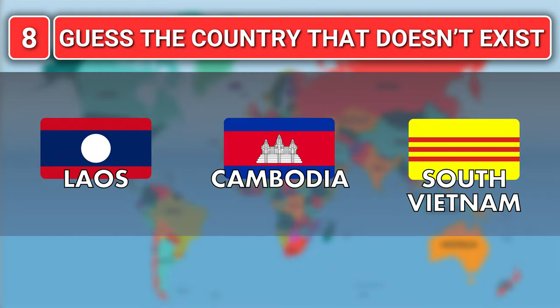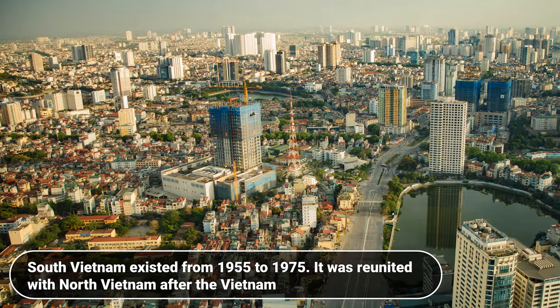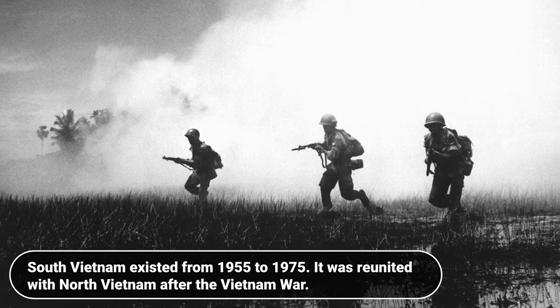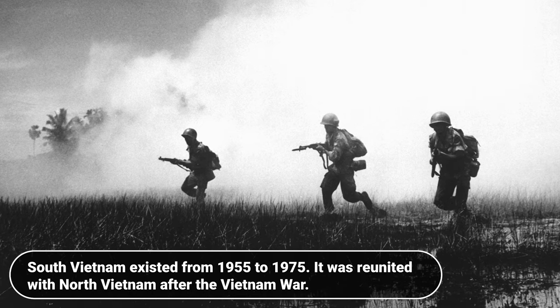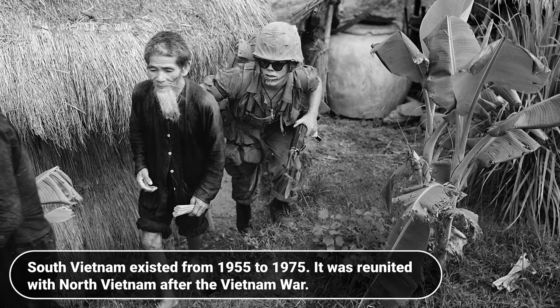Which of these countries no longer exists? Laos, Cambodia or South Vietnam? It is South Vietnam. South Vietnam existed from 1955 to 1975 and was reunited with North Vietnam after the Vietnam War.